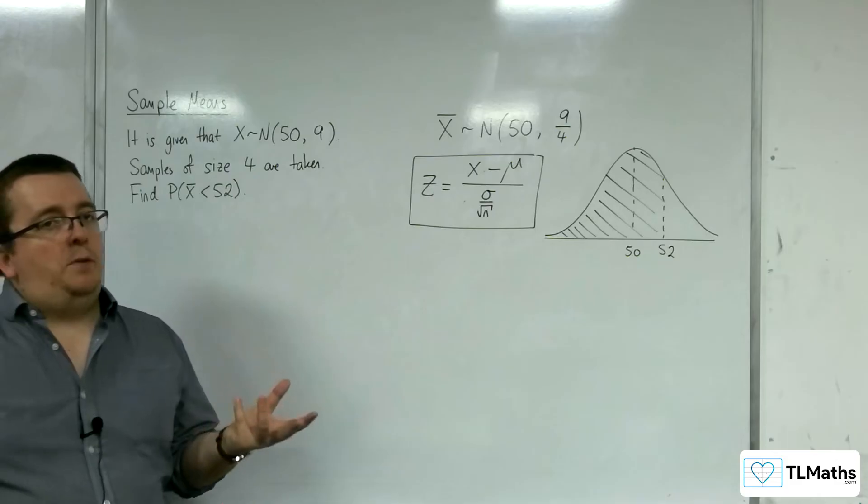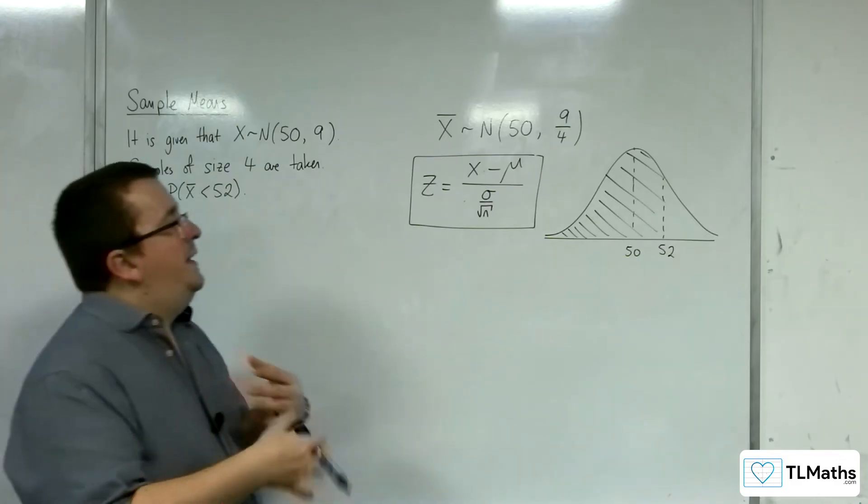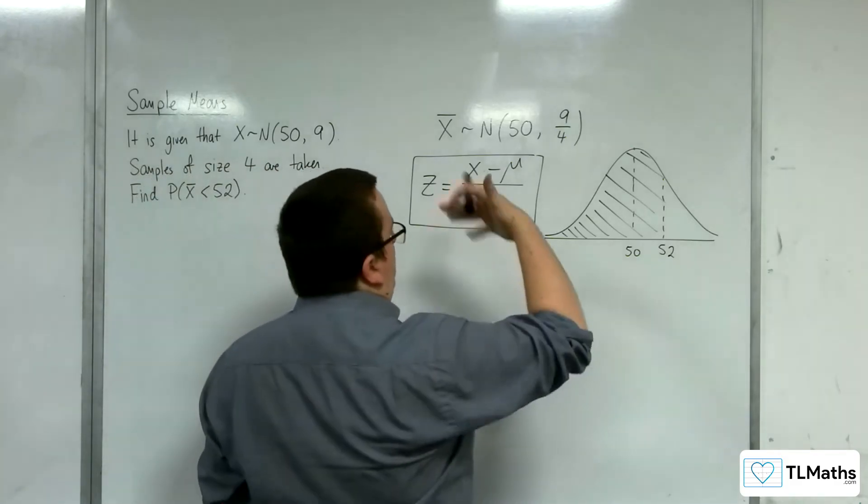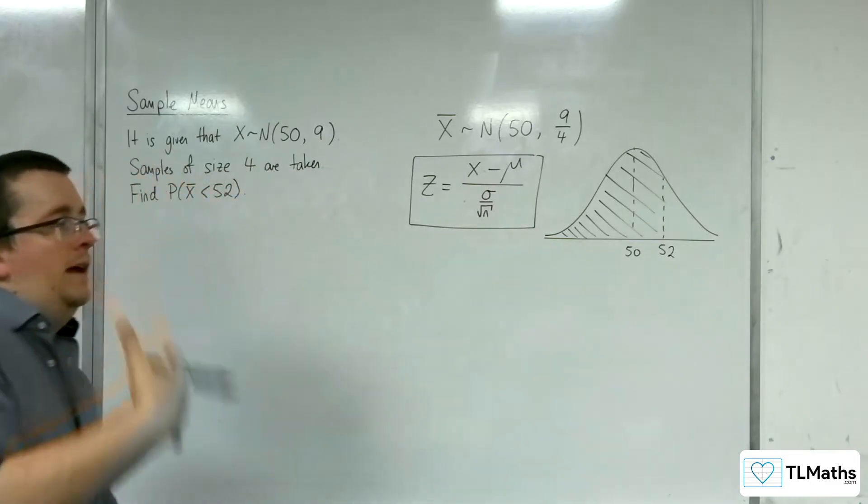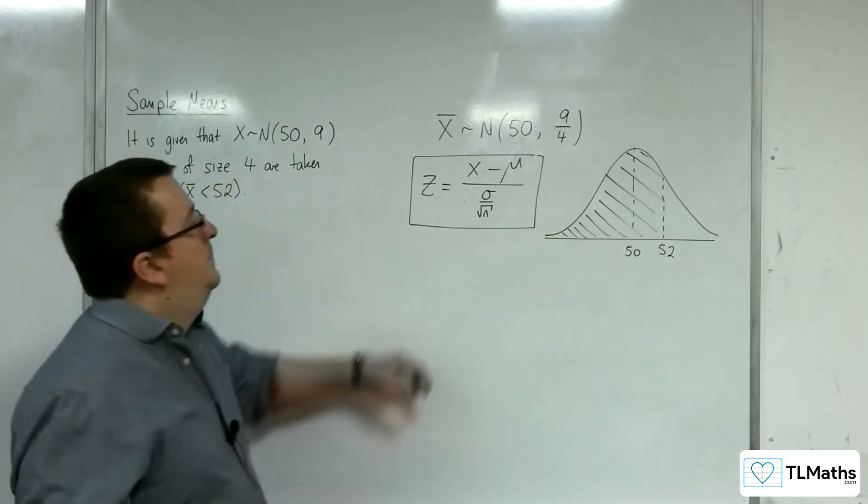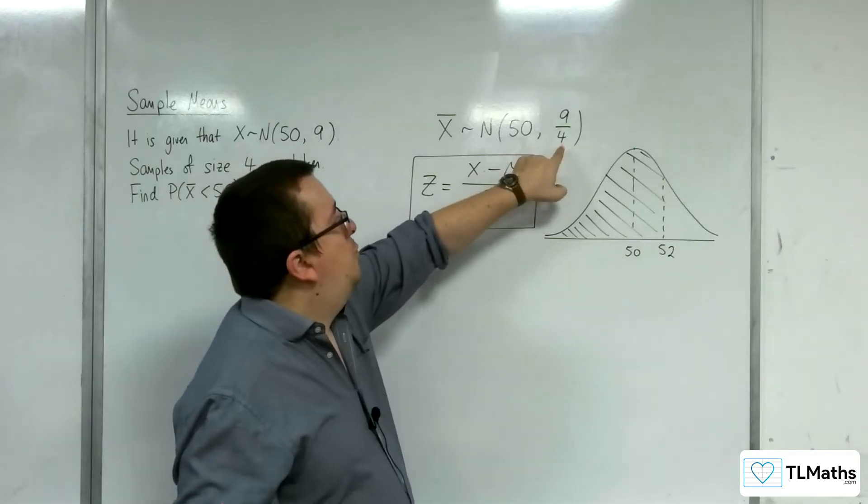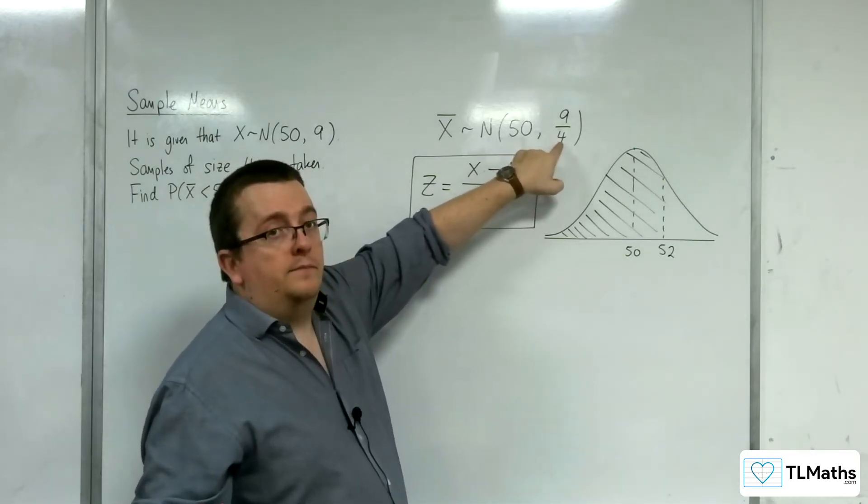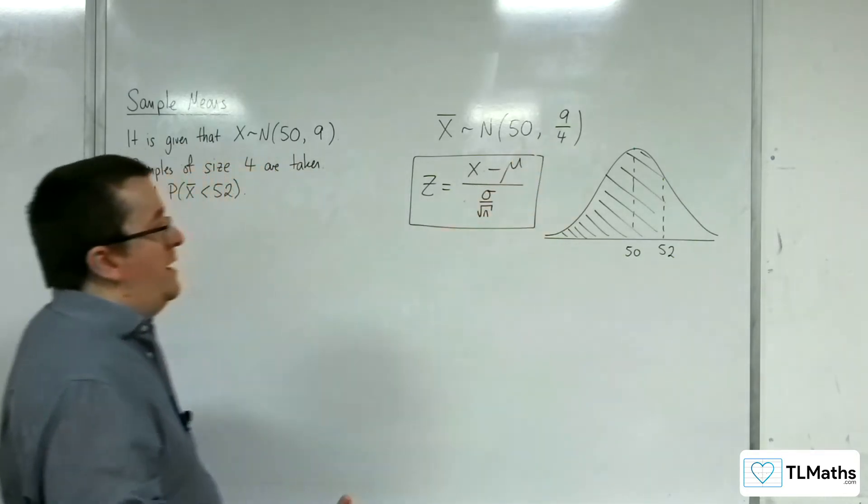You shouldn't get too pent up about that, really you just want to think about it as using the same old formula, using the tables, but you need to just do the square root of this value here, so 3 halves.